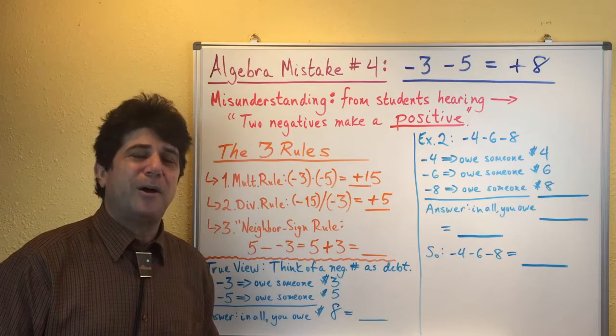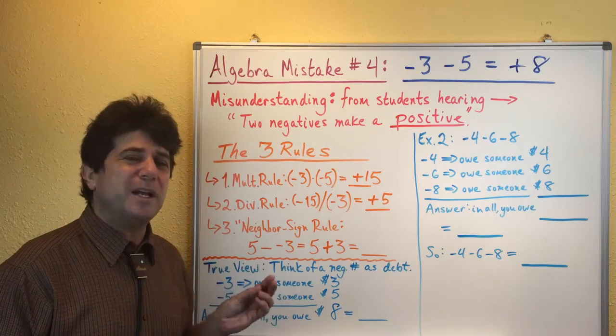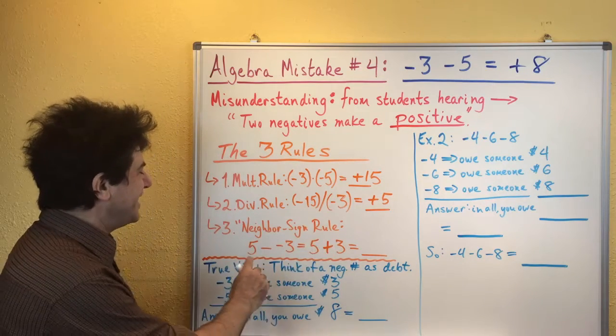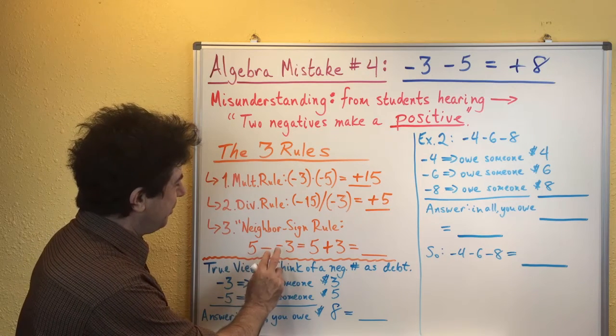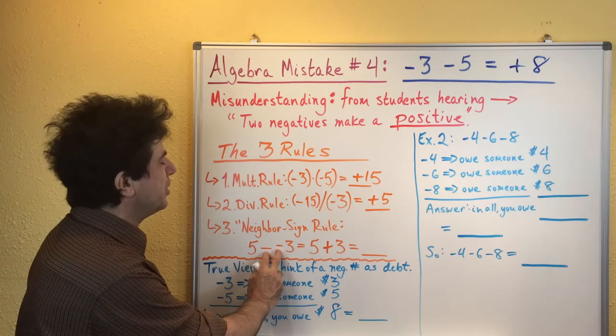The third place this also is true is when you've got two signs right next to each other, what I call the neighbor sign rule. And like in this situation here, if you've got five minus a negative three and see how these two signs are right next to each other with no number in between,